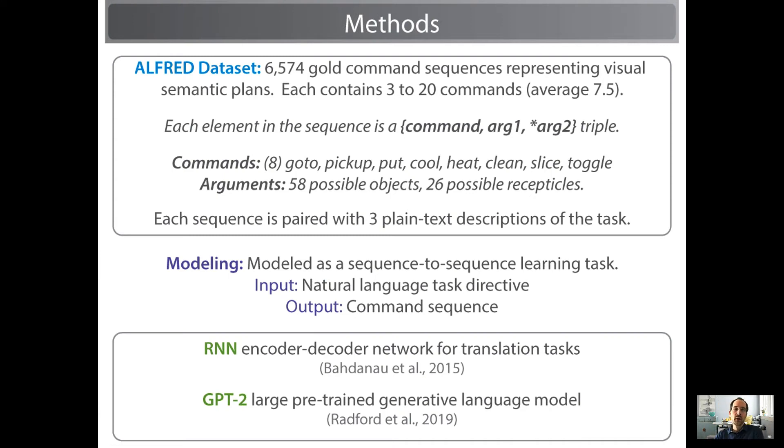So, methods. The ALFRED dataset contains over 6,000 gold command sequences, and each one is between three and 20 elements long, with the average being seven and a half elements. Each element is a triple that contains the command and any arguments. There's eight possible commands, over 50 possible objects, and 26 possible things that you can put objects in or on. So the action space is quite large compared to other environments that are out there today. Critically, each of these command sequences is paired with typically three high-level natural language descriptions, which are the task directives, which are things like put a cold apple on the table that tell the agent what to do.